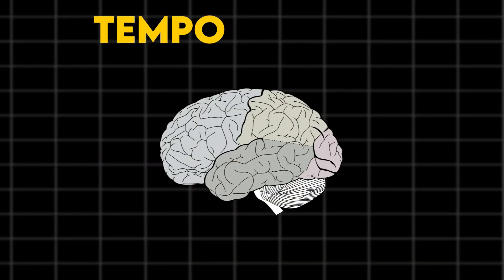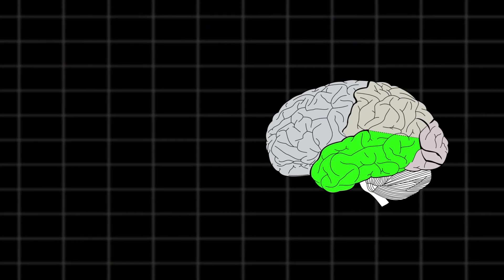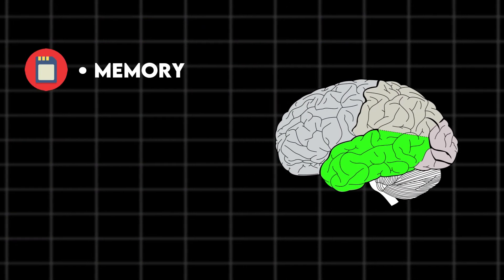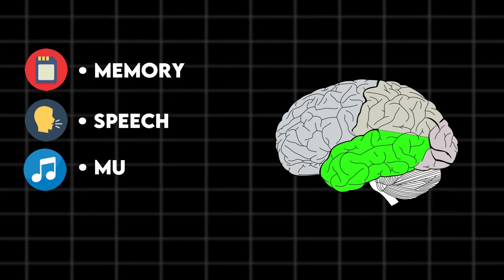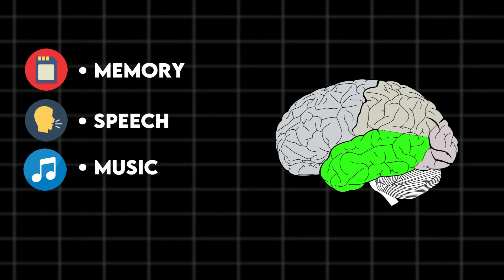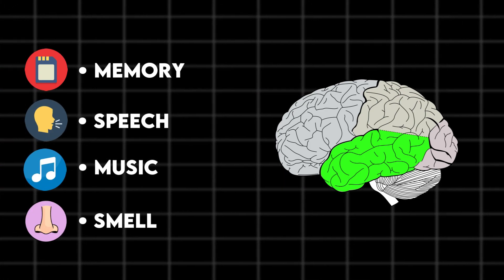The temporal lobes on the sides of the brain play a role in short-term memory, speech, musical rhythm, and to some extent, smell perception.